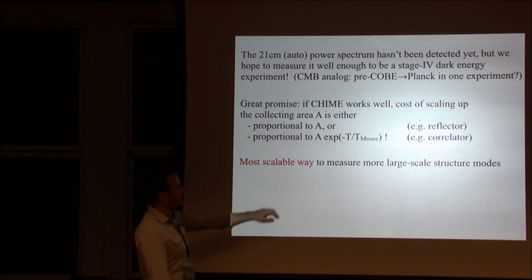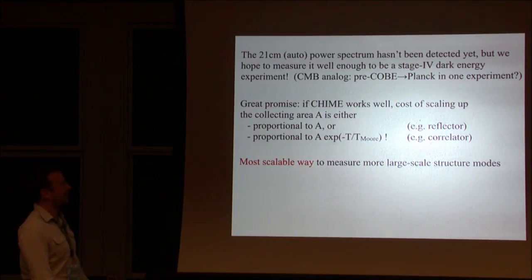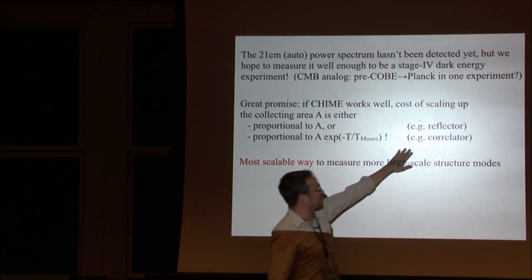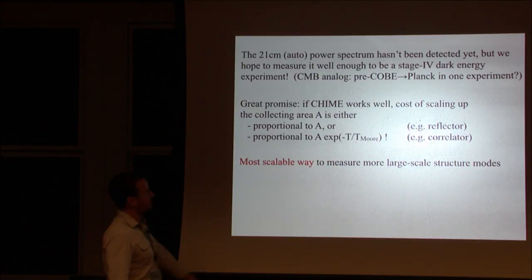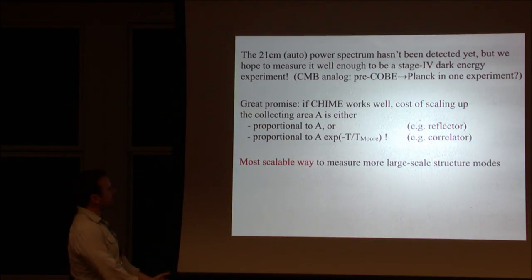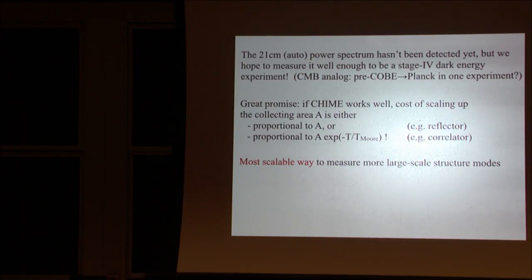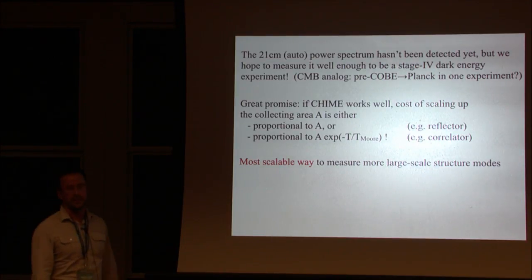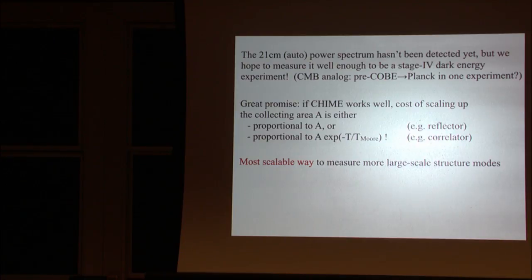If it works well, which is to say if the foreground removal works well, then the cost of scaling up is really cheap. That's why I think this program is so interesting. If you want to increase collecting area, a given component might increase proportionally to A. If you want to add more cylinders, the cost is just proportional to the collecting area. And other parts scale with an exponential Moore's Law suppression. You can keep doubling the size of the correlator every two years or doubling the computing capacity at fixed cost. This is much better scaling in A than an optical telescope. If you want to double the collecting area of an optical telescope, it's much more expensive than just one power of A. I would argue that this, if it works, is the most scalable way to measure large scale structure modes. Many cosmological parameters' statistical errors are just mode counting. Modes are the currency of cosmology. If 21 centimeter works, then I think it will be the best way to measure more modes cheaply.